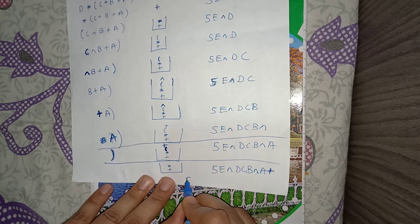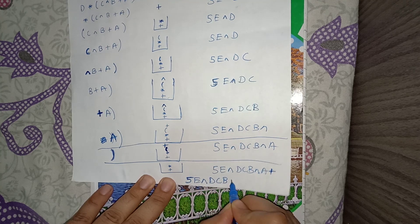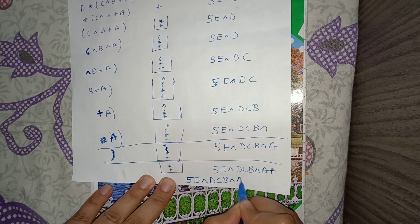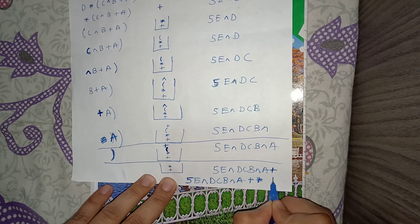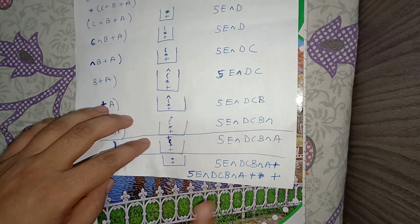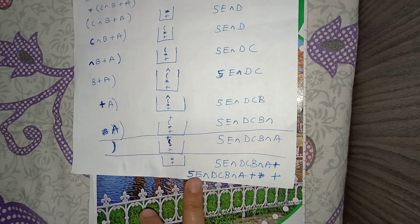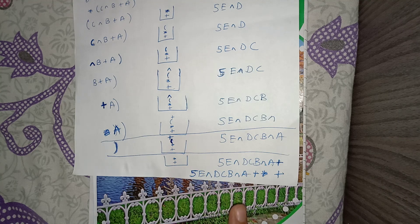We pop the remaining elements from the stack. The final postfix expression is: 5, E, XOR, D, C, B, XOR, A, plus, multiplication, plus.